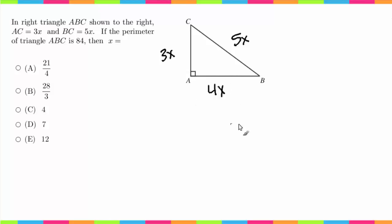If you didn't know that, that's okay. How you could figure it out is you could use the Pythagorean theorem. So you would do a squared plus, I'm just gonna call this side little b, so b squared equals c squared. We would get 9x squared plus b squared equals 25x squared.